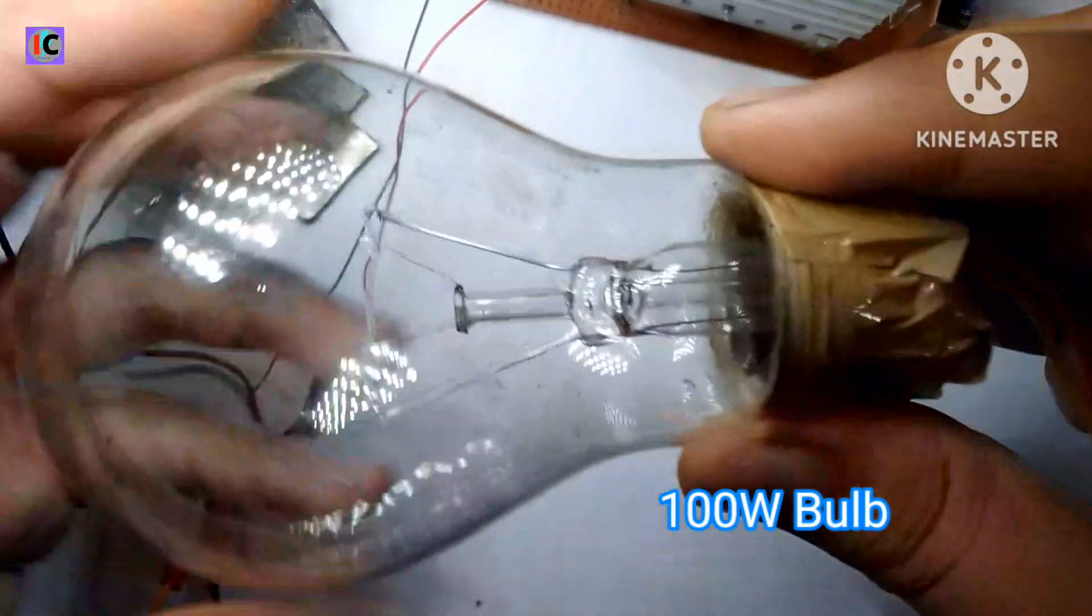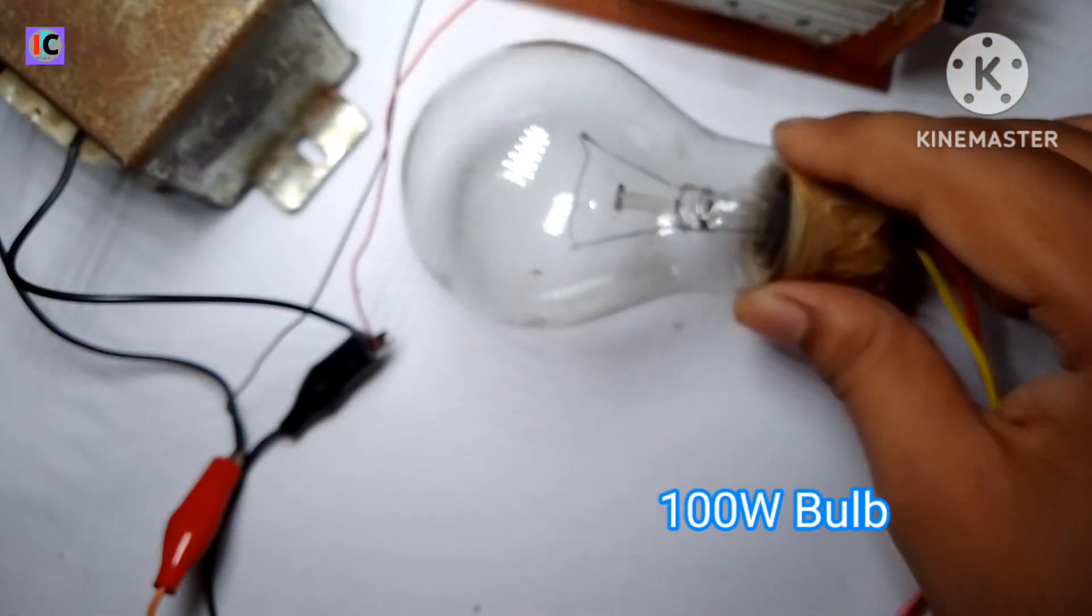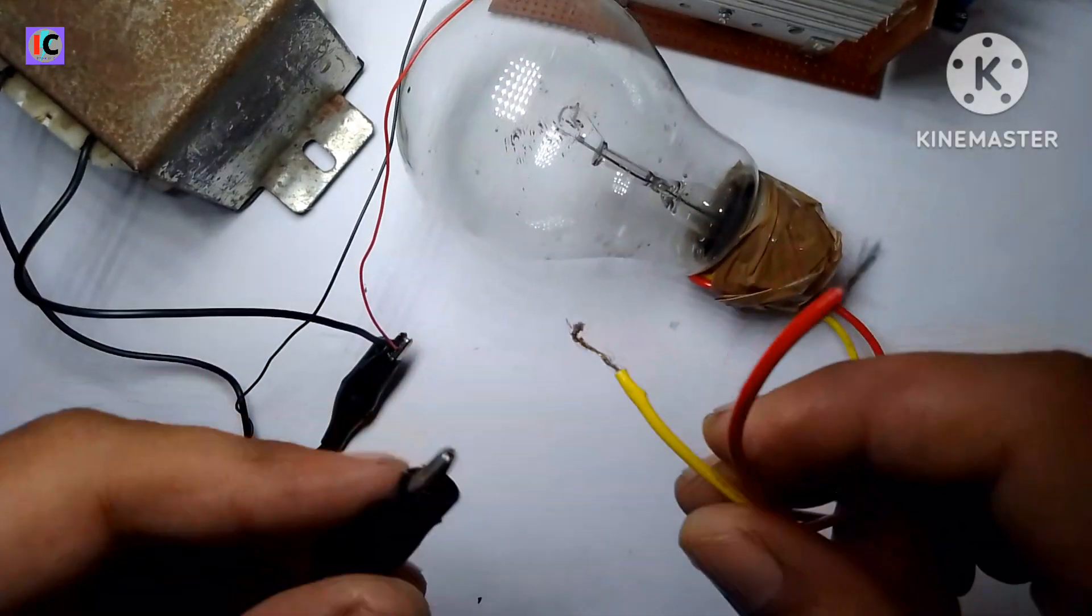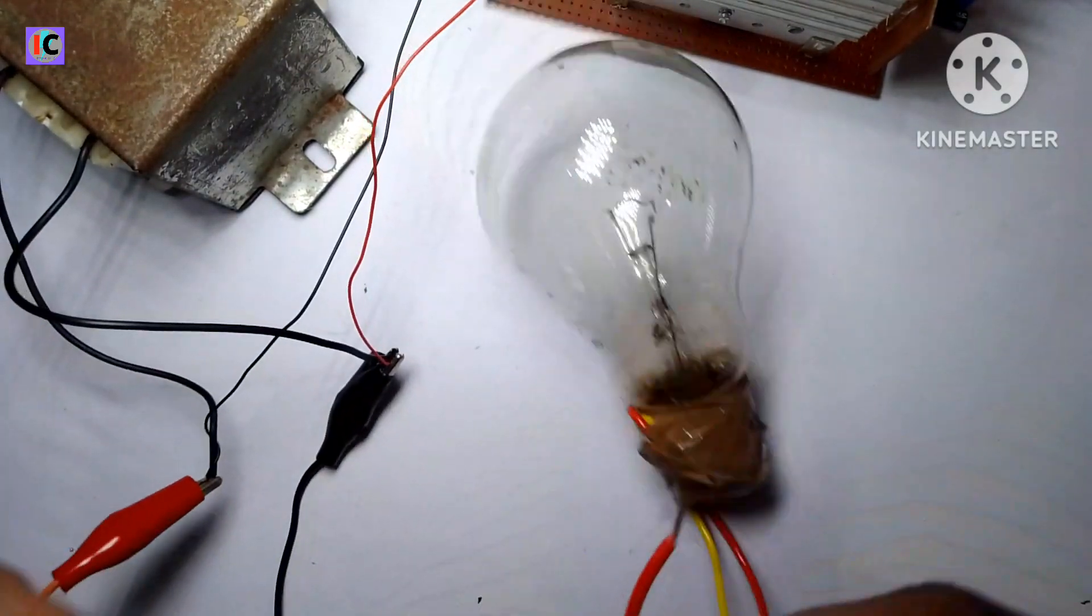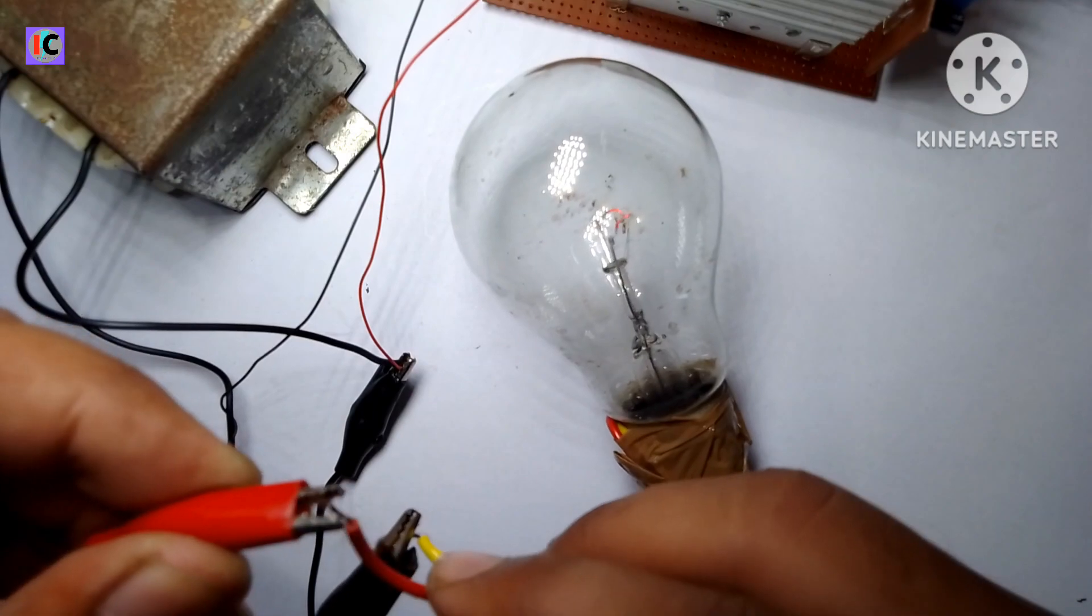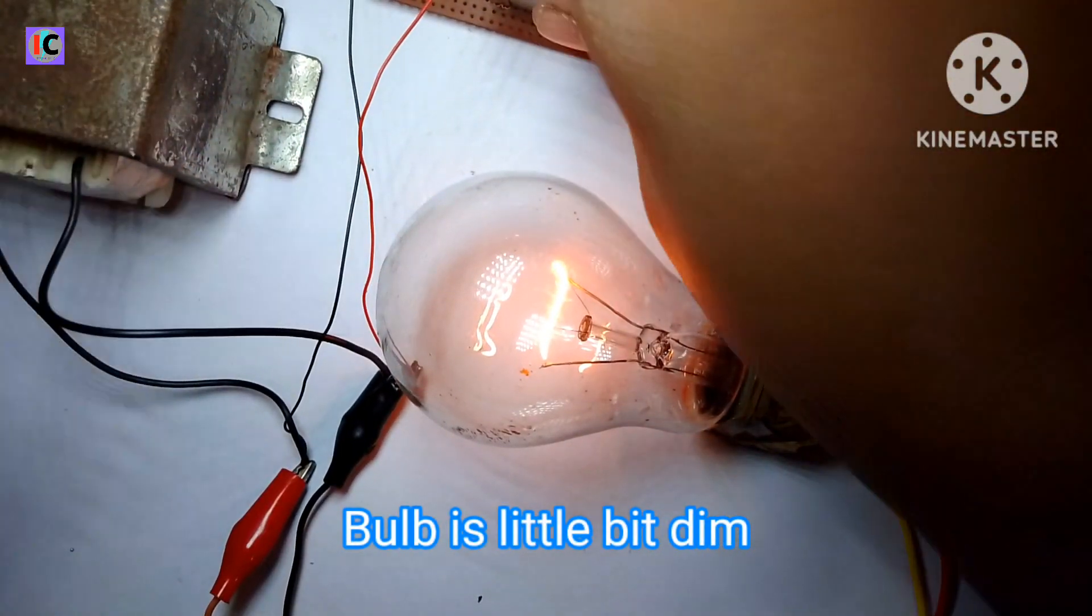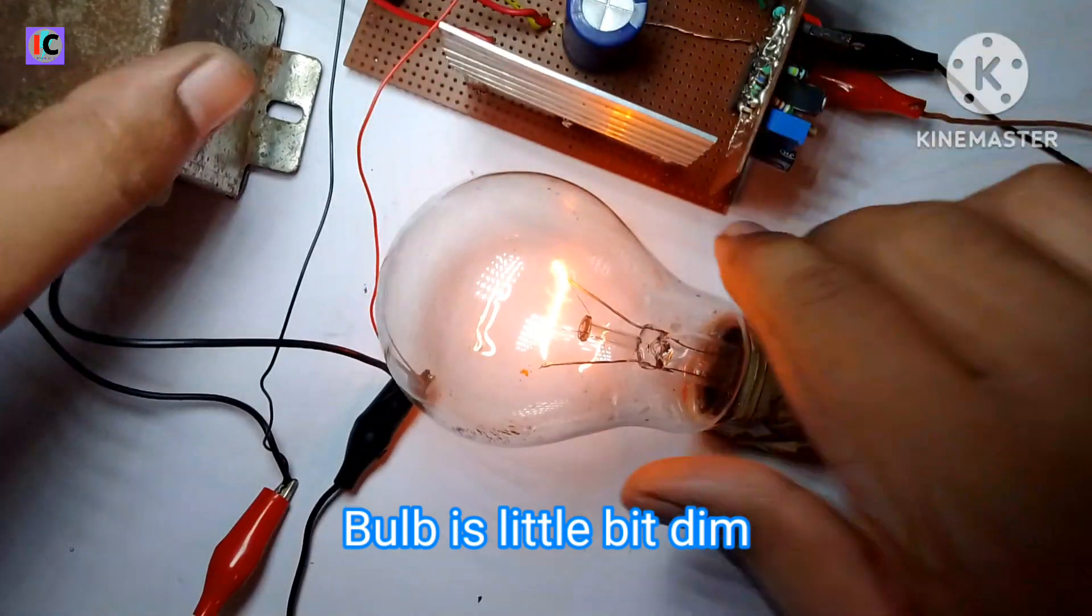After this, you can see it's a 100 watt 220 volt bulb. Now this transformer I have used is just 3 amperes, so the output maximum power will be about 70 watts. Also, you can see the brightness of this bulb is not as bright.